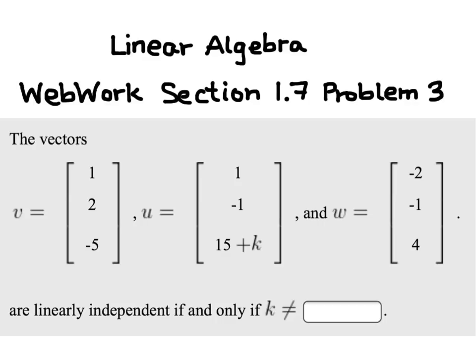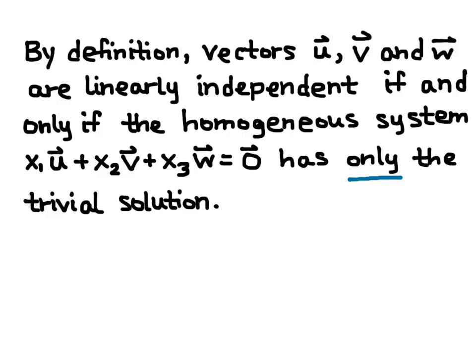Let's start by reviewing the definition of linear independence. By definition, vectors U, V, and W are linearly independent if and only if the homogeneous system X1U plus X2V plus X3W equals 0 has only the trivial solution.